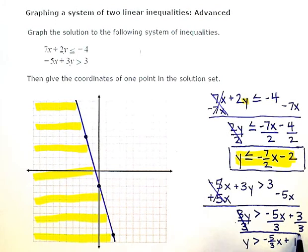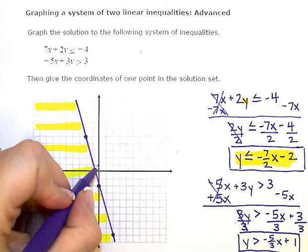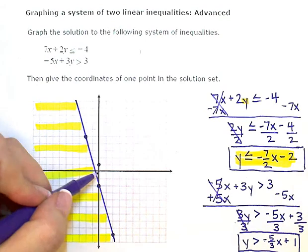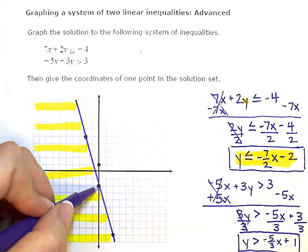So here's my second inequality ready to be graphed. So my y-intercept this time is positive 1. Right here, positive 1. So I'm going to put a dot at positive 1. Then use my slope to plot more points and line them up. So down 5, over 3, down 5, over 3.